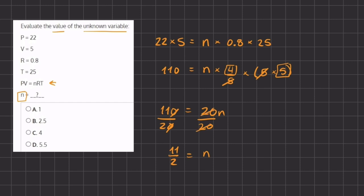11 divided by 2 is going to be the value of n, but all of our answers are written in decimal form so we need to convert this into a decimal. Once we do so we get 5.5 to equal n, and so in our answers that is going to be answer d.